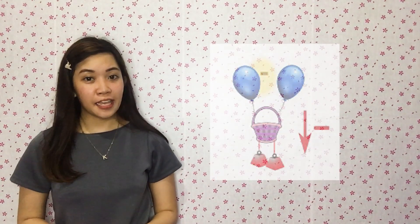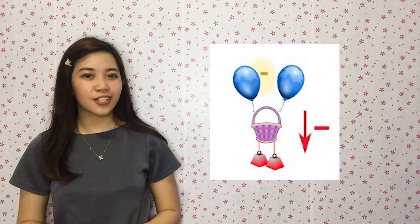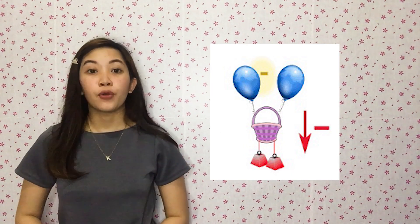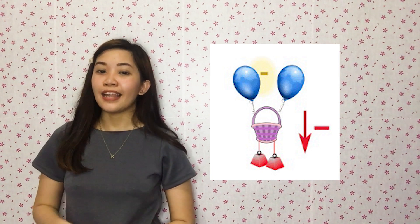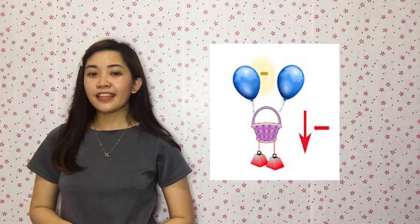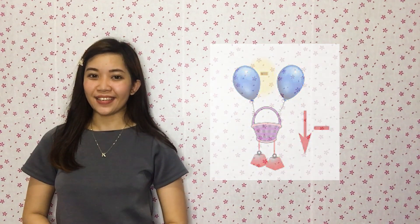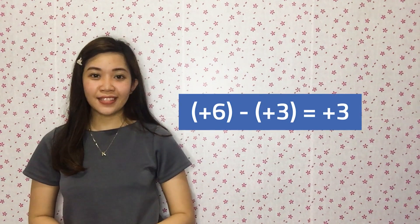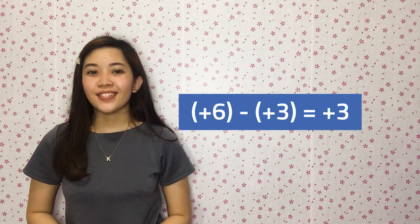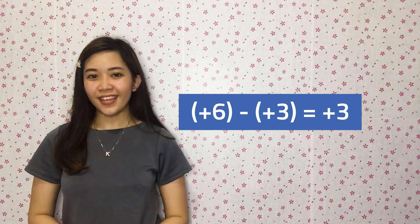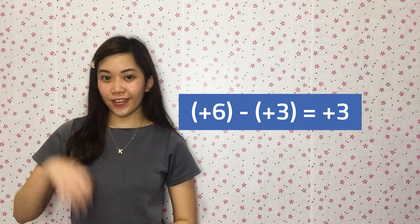Now let's try subtracting integers. Subtracting positive numbers is just simple subtraction. We can take away balloons like we are subtracting a positive value and the basket gets pulled downwards. For example, positive 6 minus positive 3 is equal to positive 3. That's very simple!